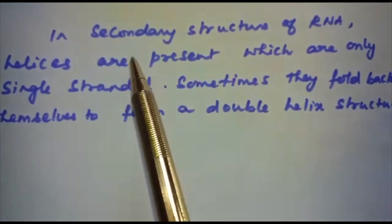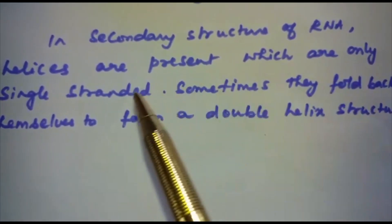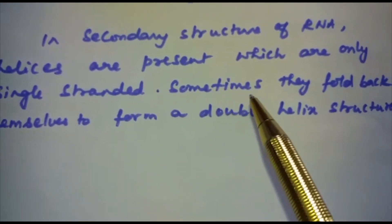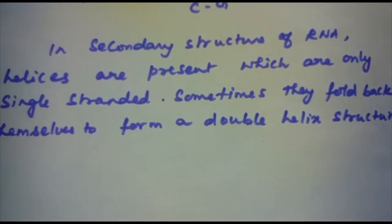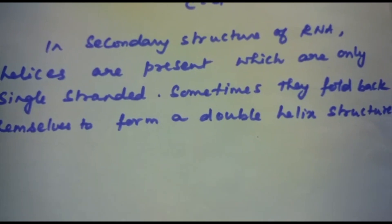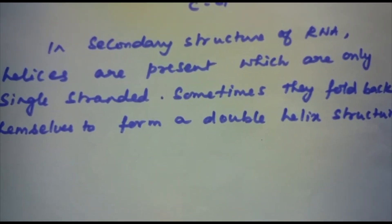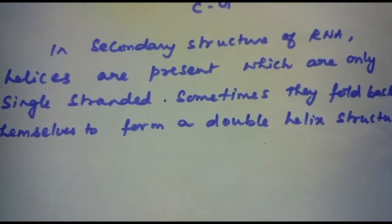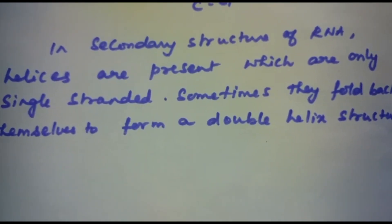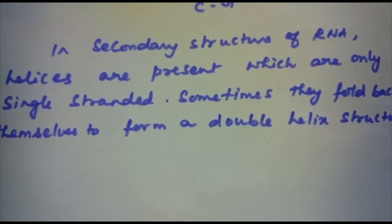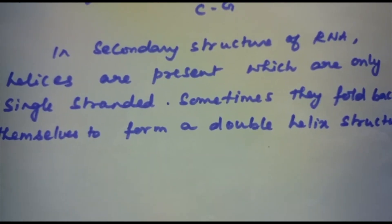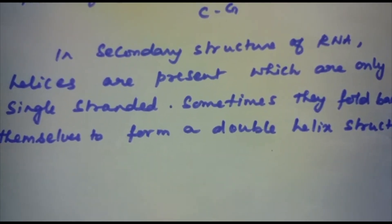In the secondary structure of RNA, helices are present which are only single-stranded. Sometimes they fold back on themselves to form a double helical structure. RNA molecules are of three types and they perform different functions. They are named as mRNA (messenger RNA), rRNA (ribosomal RNA), and tRNA (transfer RNA).